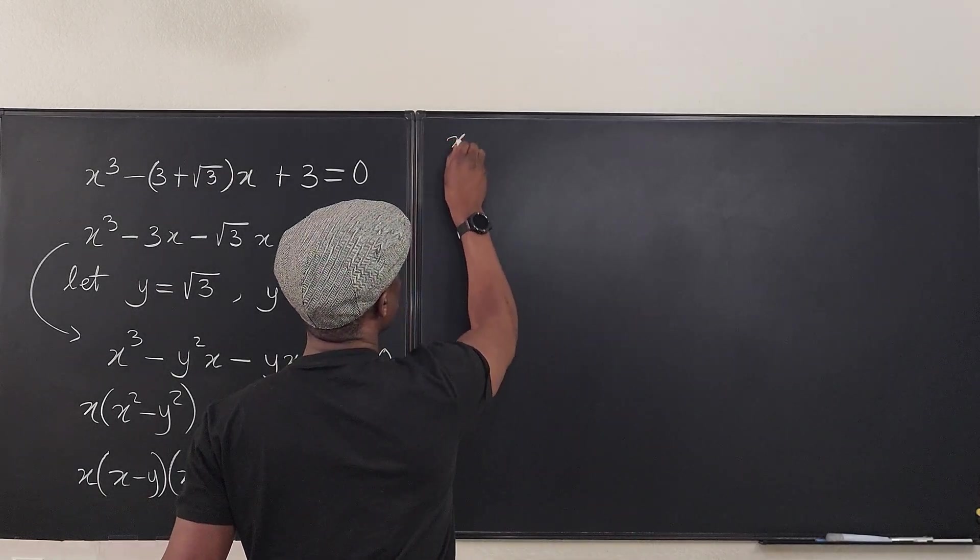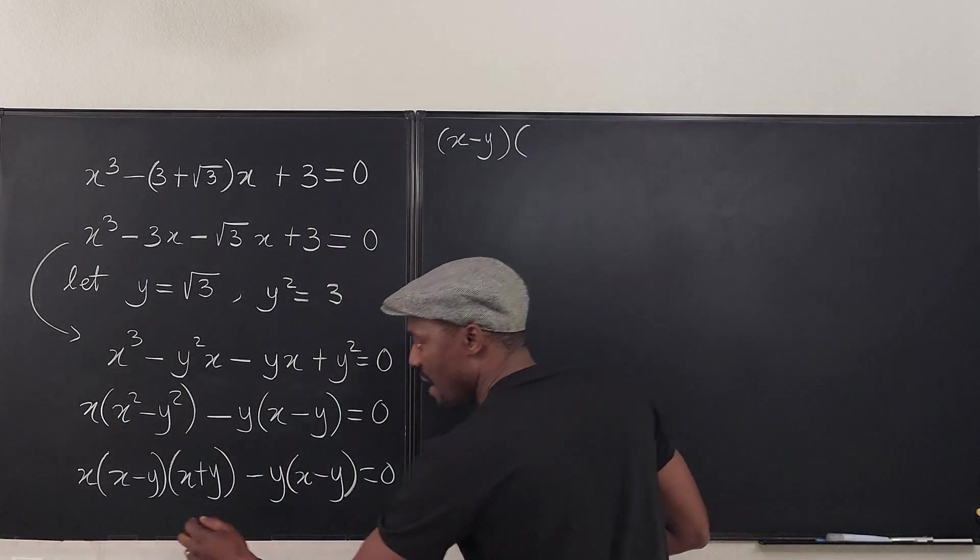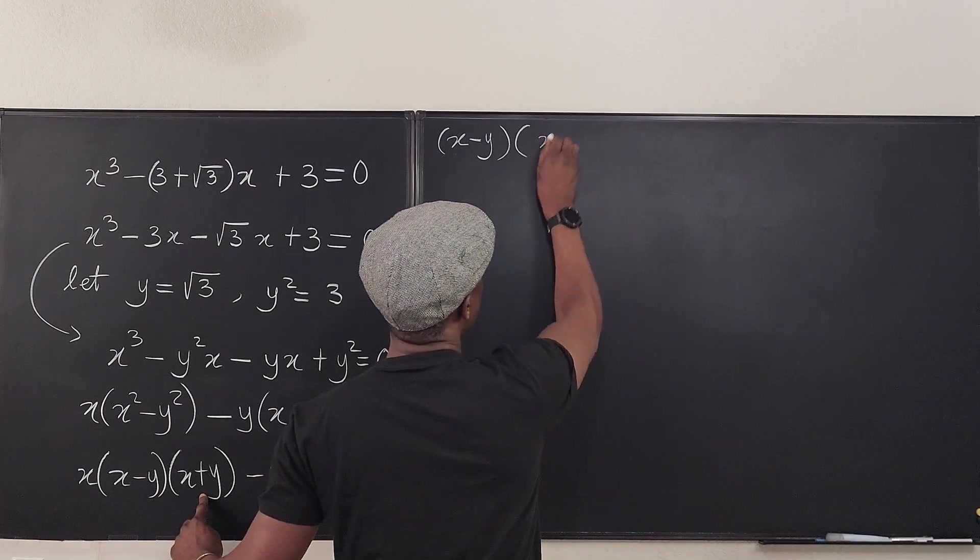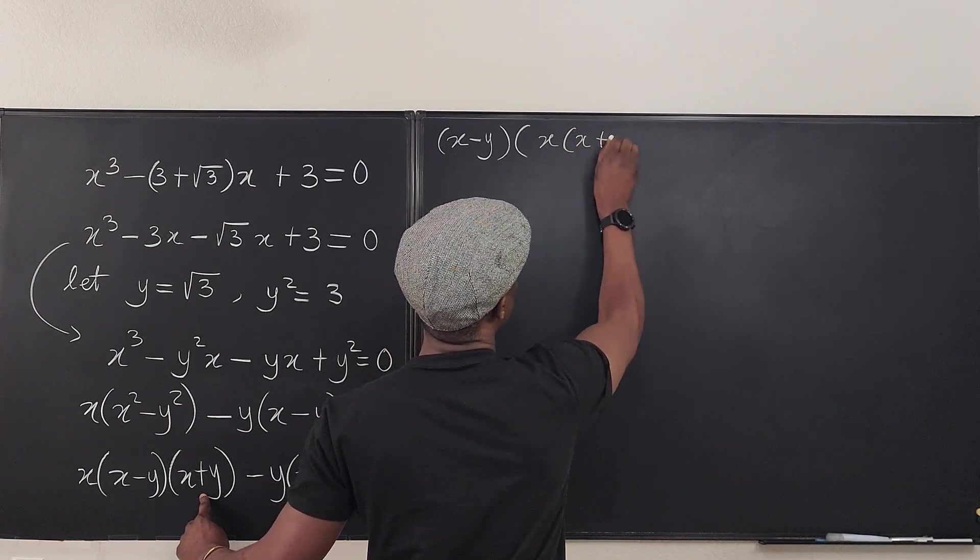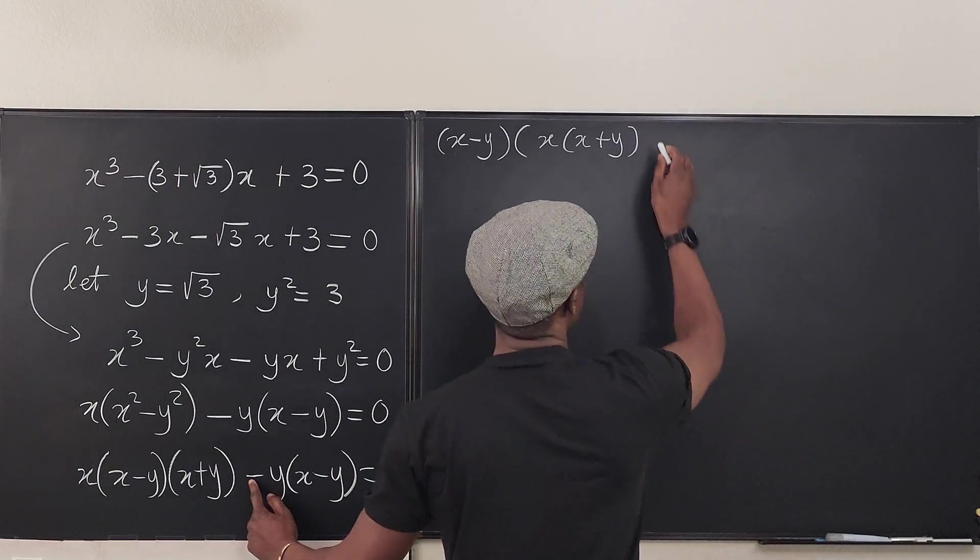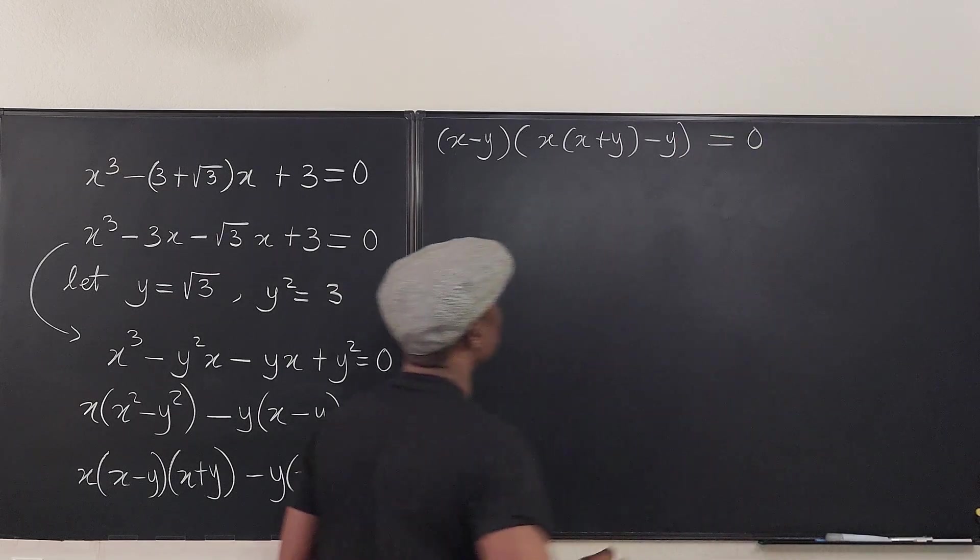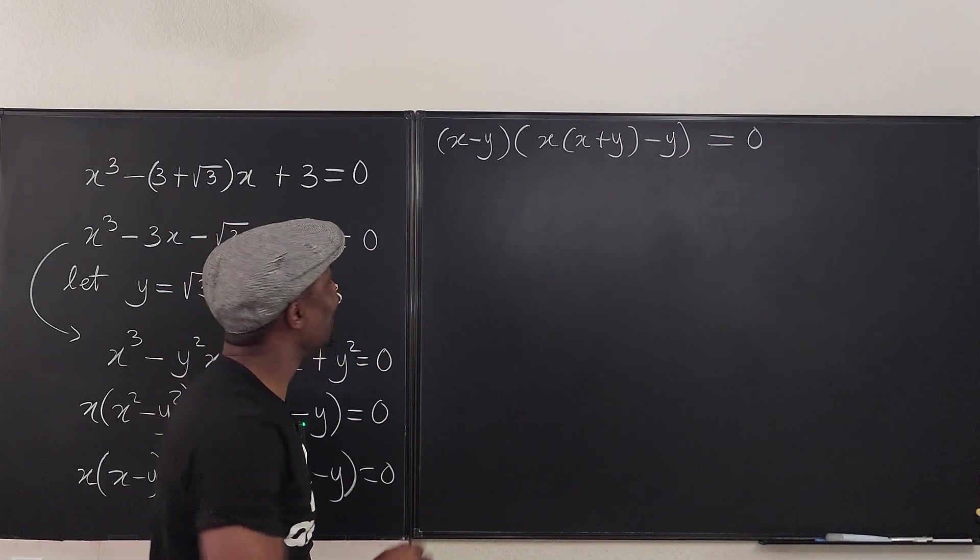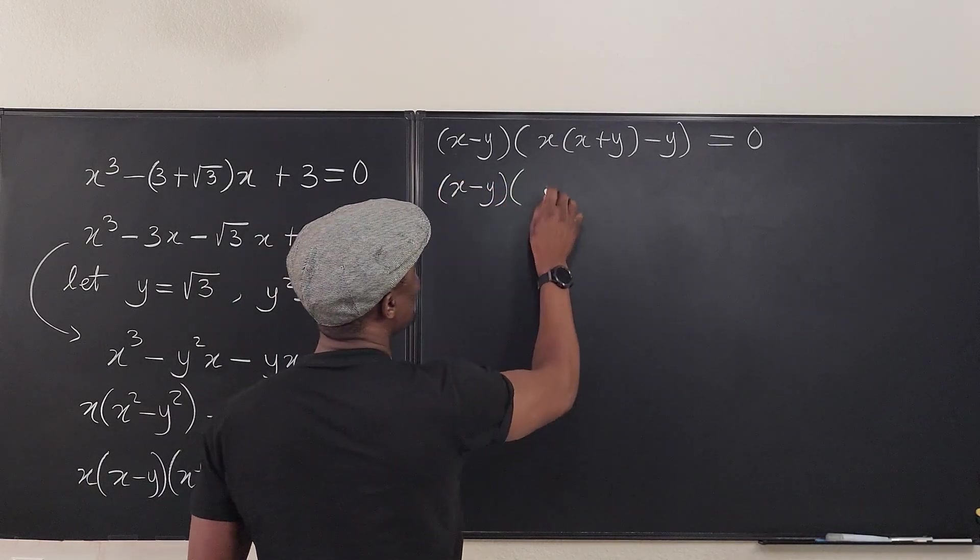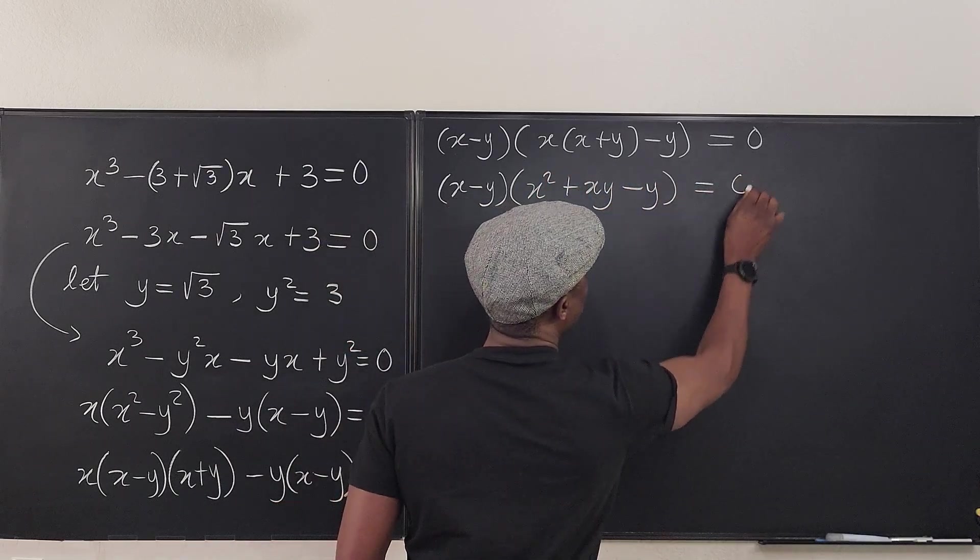So what we have now is if I take this out, so I take one out from here and here, I'm going to end up with (x - y) times what's going to be left if I take this out factored: I'll have x times (x + y) - y remaining. And this is equal to zero. Let's clean this up so we have (x - y) times (x² + xy - y) = 0.